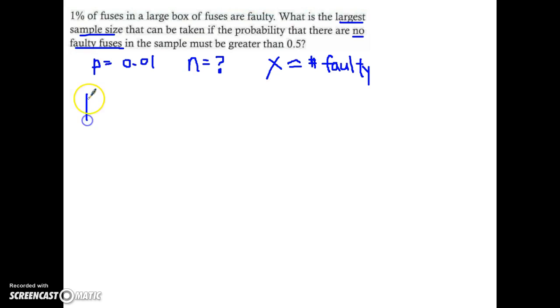So they want us to find the probability - actually they want us to find the sample size when your faulty fuses is equal 0, no faulty fuses. It's greater than 0.5.